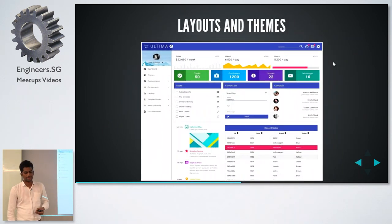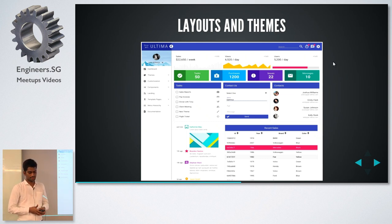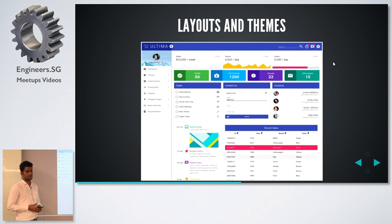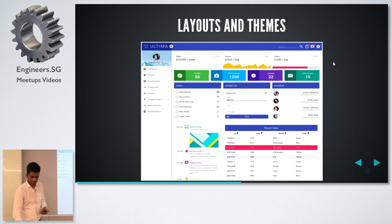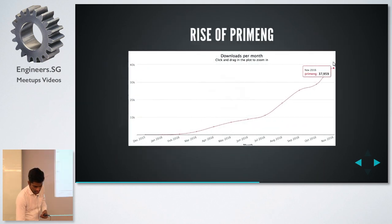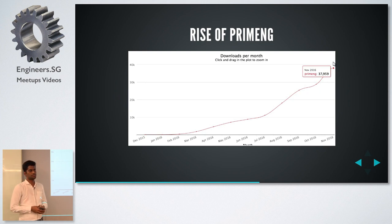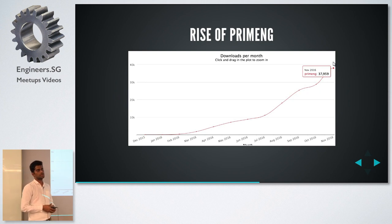These are some of the layouts available in PrimeNG. You can get whatever design you want, and along with the free themes you can get these layouts as well. This graph shows the progress of PrimeNG — in the last month there were around 40,000 to 45,000 downloads, which is very rare for a one-year-old project.